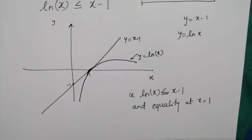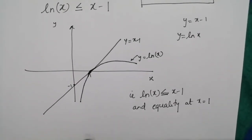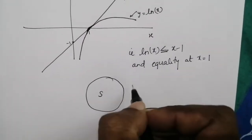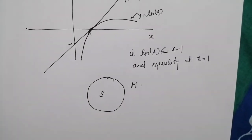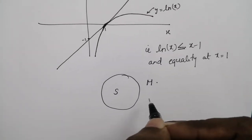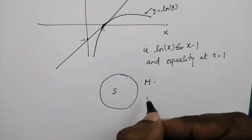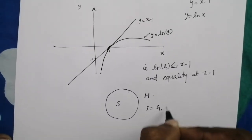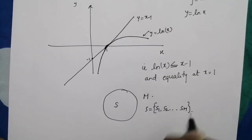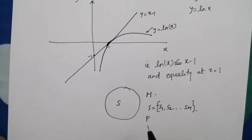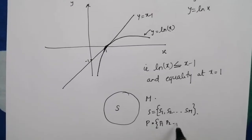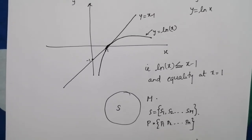In order to evaluate the upper bound for entropy, we consider a source S of size m. A source of size m means the source is capable of emitting m unique symbols: S = {s₁, s₂, …, sₘ}. The probability of emitting each symbol is given by p₁, p₂, …, pₘ respectively.